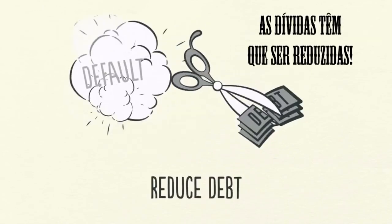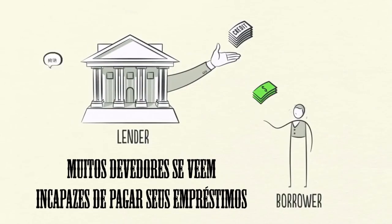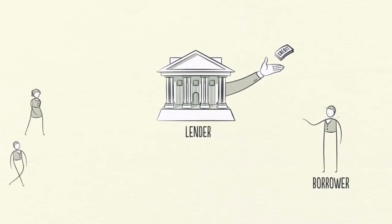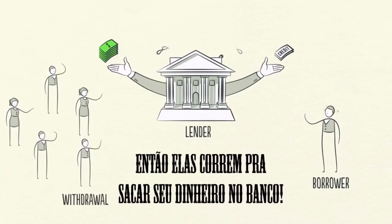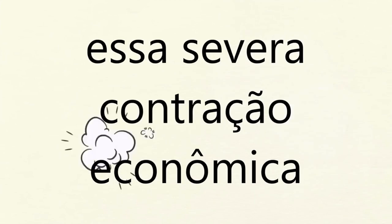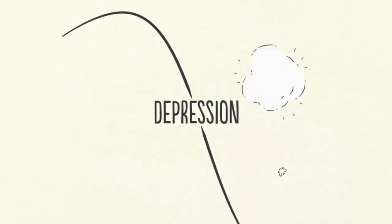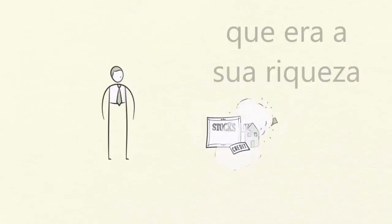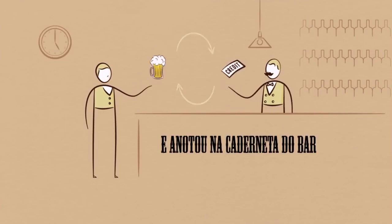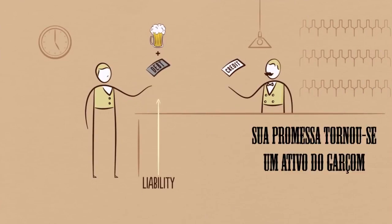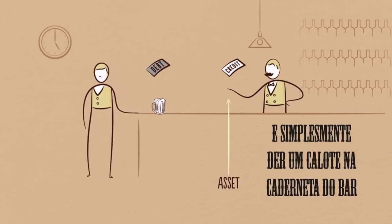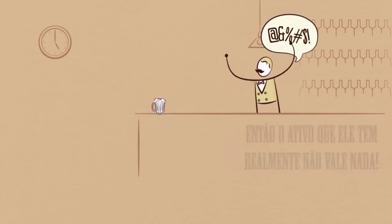Debts must be reduced. Many borrowers find themselves unable to repay their loans, and a borrower's debts are a lender's assets. When a borrower doesn't repay the bank, people get nervous that the bank won't be able to repay them, so they rush to withdraw their money. Banks get squeezed, and people, businesses, and banks default on their debts. This severe economic contraction is a depression. A big part of a depression is people discovering much of what they thought was their wealth isn't really there. Like the bar tab analogy: if you don't pay the bartender back and default, the asset he has isn't really worth anything — it has basically disappeared.